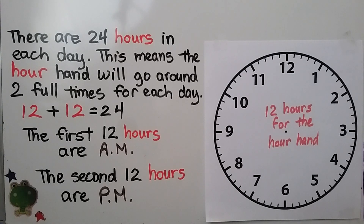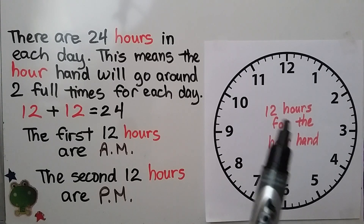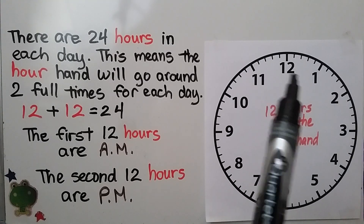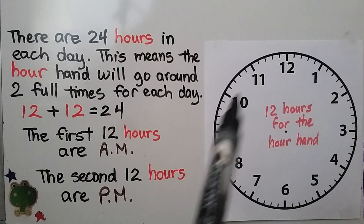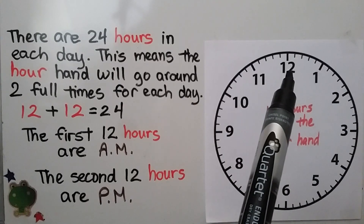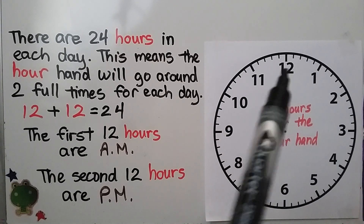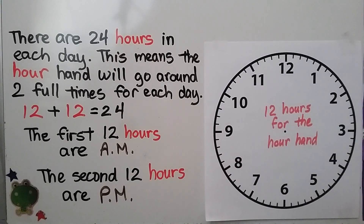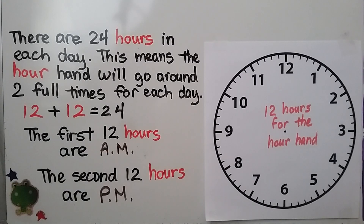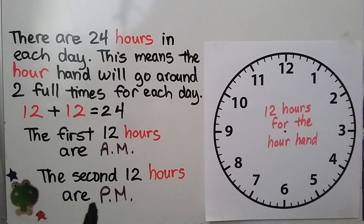There are 24 hours in each day. This means the hour hand will go around two full times for each day — all the way around once is 12 hours, and all the way around again makes 24 hours, because 12 plus 12 equals 24. The first 12 hours are the A.M. hours, and the second 12 hours are the P.M. hours.